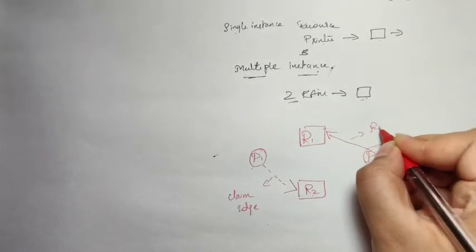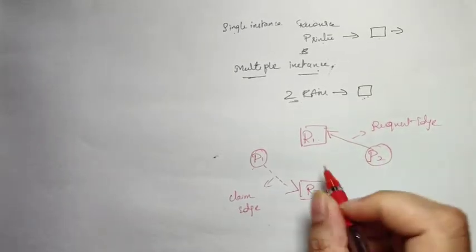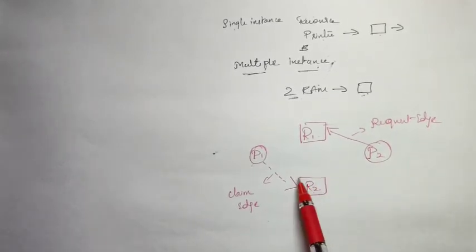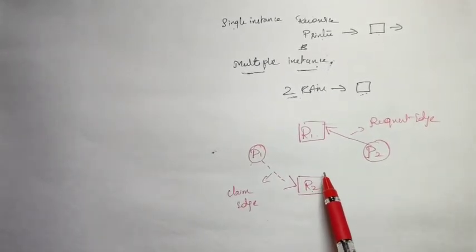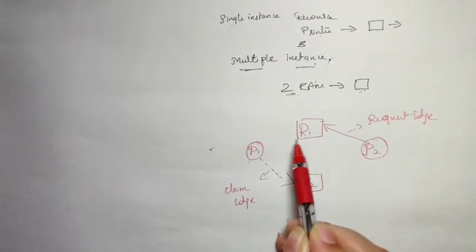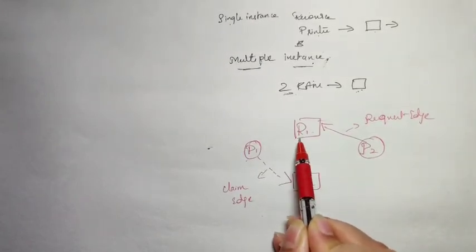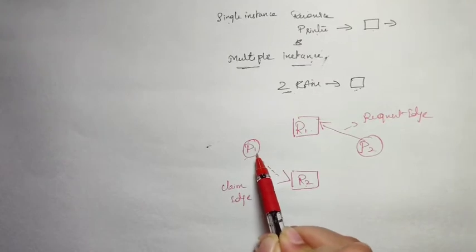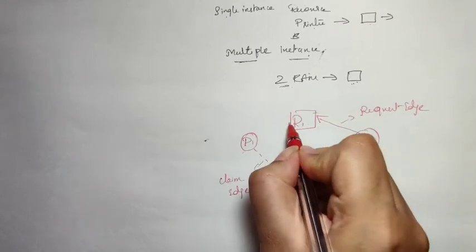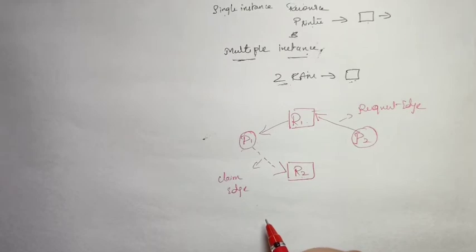Next is the allocation edge, also called the assignment edge. Whenever a resource is free, the operating system allocates that resource to a process. Here, resource R1 is free, so the operating system allocates it to process P1. This is called the assignment edge or allocation edge.